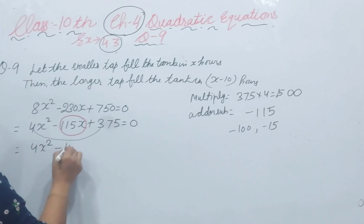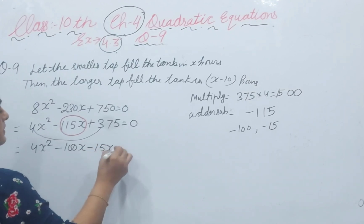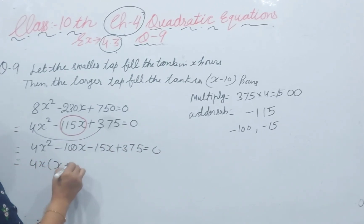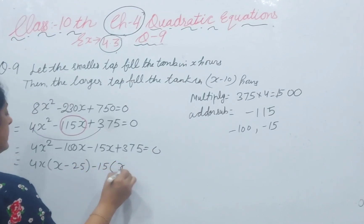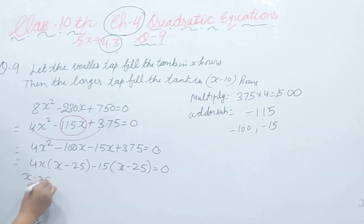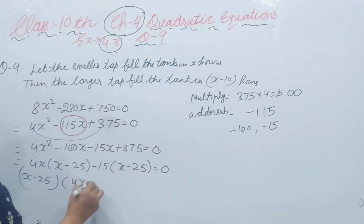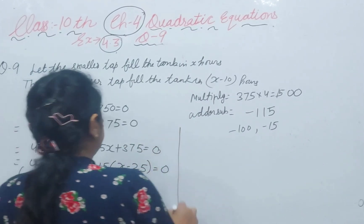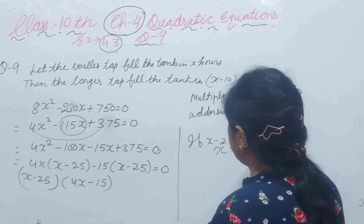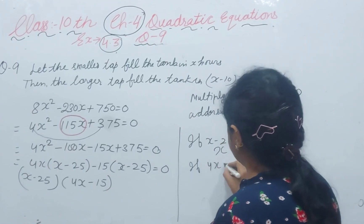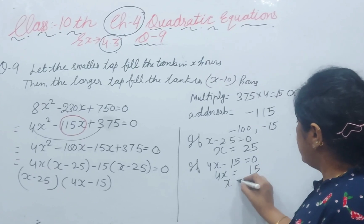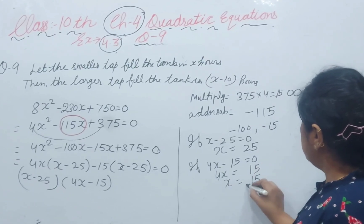So we write: 4x squared minus 100x minus 15x plus 375 equals 0. Taking 4x common from the first two terms gives 4x(x minus 25), and taking minus 15 common gives minus 15(x minus 25) equals 0. Therefore (x minus 25)(4x minus 15) equals 0, giving x equals 25 or x equals 15/4.